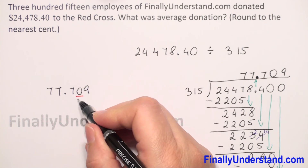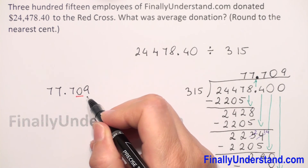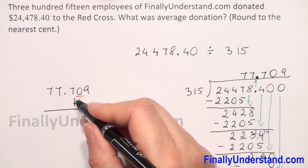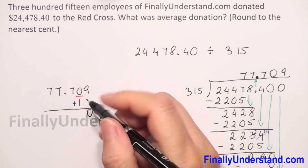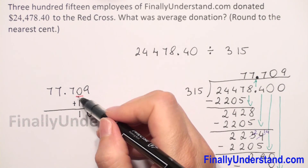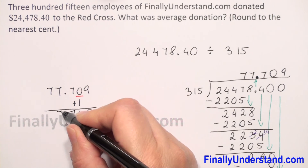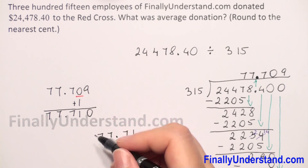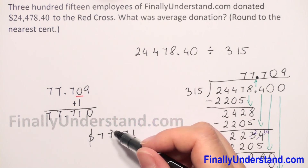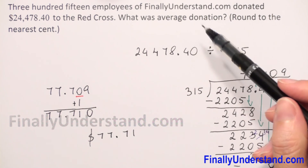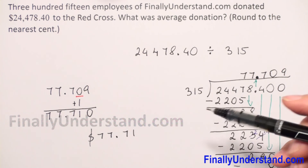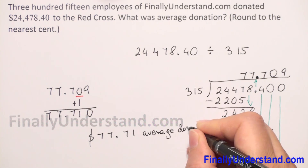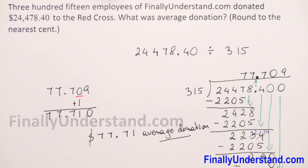We check the digit after the underlined place — it is 9. When we have a number greater than or equal to 5, we add 1 to the underlined digit and change all digits after it to 0. So 0 plus 1 is 1, and we copy everything before the underlined digit. Our solution is $77.71. That was the average donation.